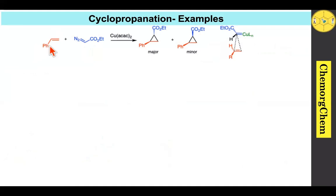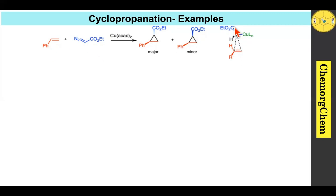Here are some examples based on cyclopropanation. The styrene compound reacts with a diazo compound in the presence of copper acetylacetonate, which readily produces the corresponding cyclopropane compound. The trans-oriented product is obtained as the major one and the cis as the minor one. We can explain the stereochemistry from the transition state: the phenyl group and the ester group are both present in the trans arrangement in order to reduce steric hindrance, therefore the trans diastereomer is produced as the major form.